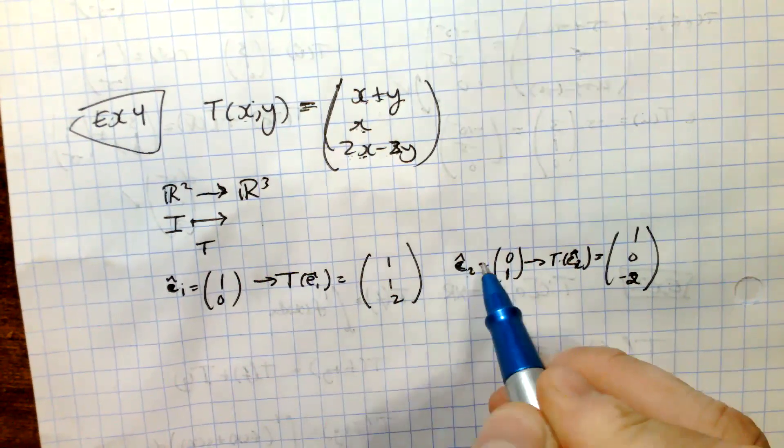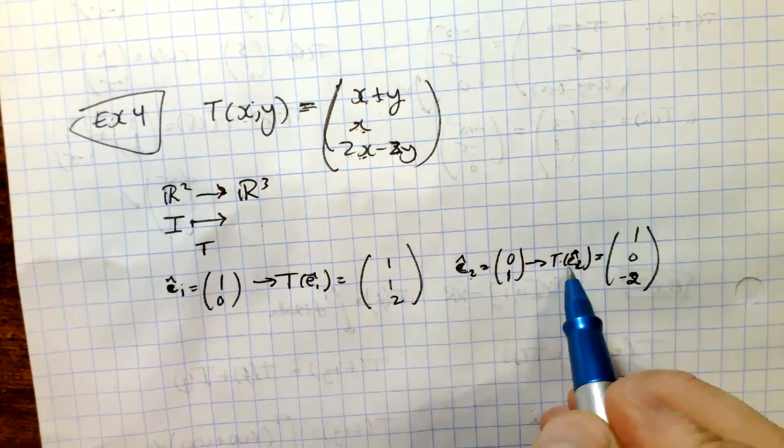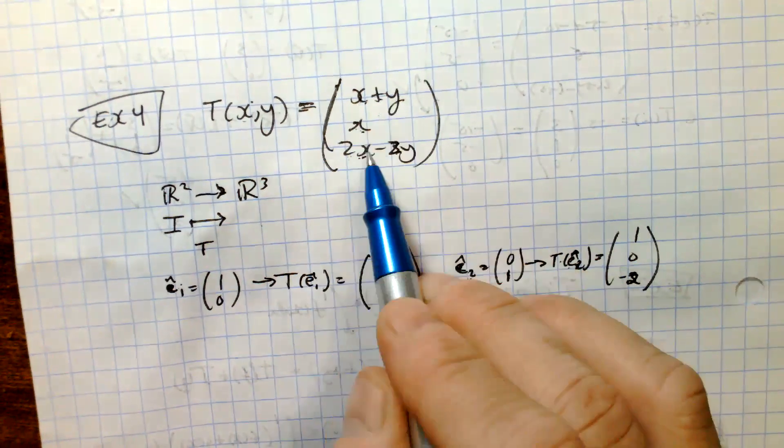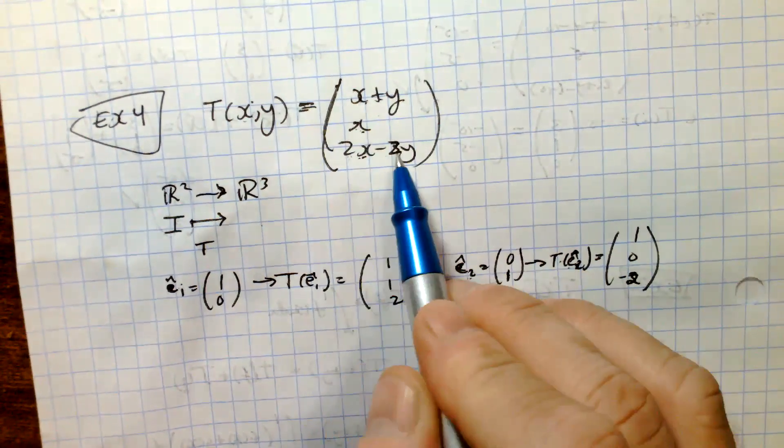And the second column is E2, and it goes from 0, 1. So under this transformation, you get 0 plus 1, you get 0, and you get 2 times 0 minus 2.